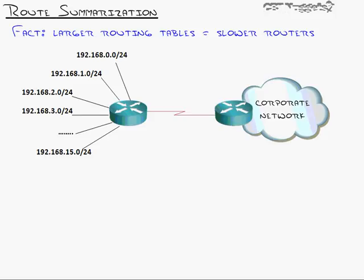That's called cheap summarization because it's not very efficient. If I send that route advertisement, Router 1 claims to have all 192.168 networks, and I can no longer use 192.168 networks anywhere else in my network because Router 1 has laid claim to them all. It only has 16 networks but claims to have them all, wasting a whole chunk of IP addresses. So here's how you can do route summarization more efficiently.